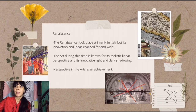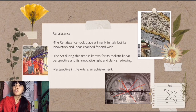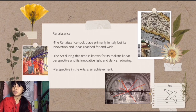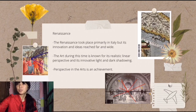The subject in Renaissance art is biblical scenes, due to the dominance of the Roman Catholic Church in this period. Even though Renaissance took place primarily in Italy, its innovative ideas in arts and architecture spread across Europe and were known around the world. The art during this time is known for its realistic linear perspective and innovative light and dark shadowing.